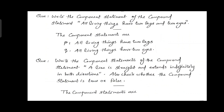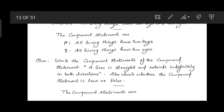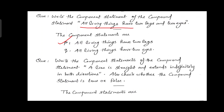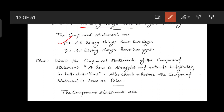First question: write the component statements of the compound statement 'All living things have two legs and two eyes.' The connective is 'and'. The component statements are: first, 'All living things have two legs', and second, 'All living things have two eyes.'